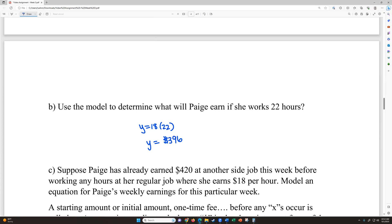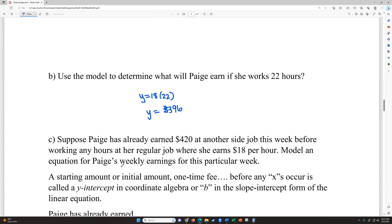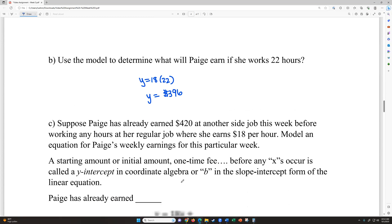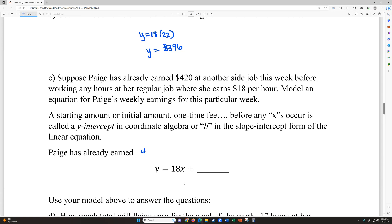Suppose Paige has already earned $420 at another side job this week before working any hours at her regular job where she earns the $18 per hour. Model an equation for Paige's weekly earnings for this particular week. So a starting amount or initial amount, sometimes called a one-time fee, before any x's occur is the y-intercept or the b in our formula. So Paige has already earned just a fixed $420. So now instead of a plus zero at the end, which we didn't really write, we would have plus $420. So she's already got this in her bank. Now she's going to work her regular job.